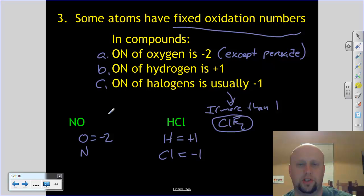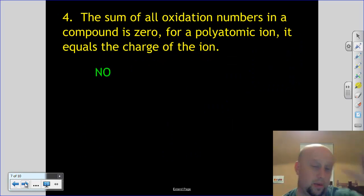So oxidation number of oxygen, always negative two, hydrogen plus one, halogens negative one. That makes the next part palatable and easy.